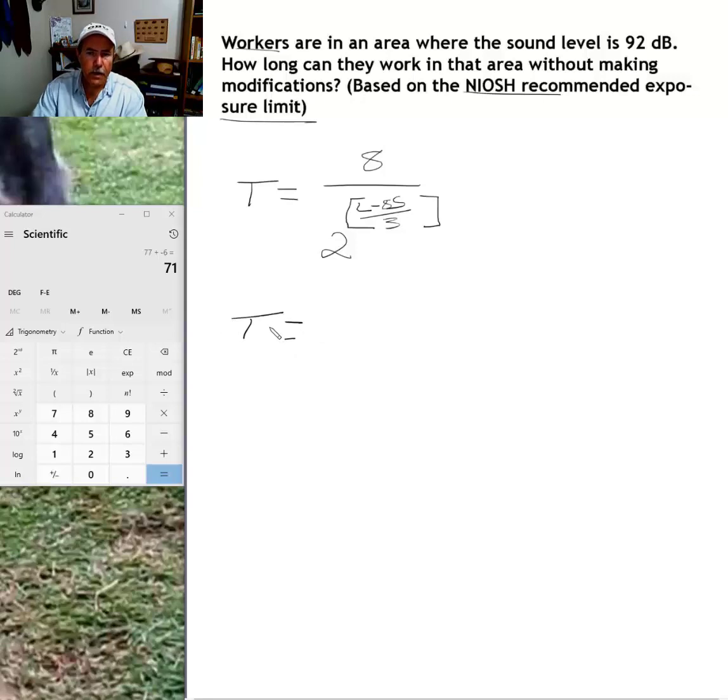Let me explain what all the different variables, symbols, and letters mean. T is the time that we're calculating. Eight is a constant based upon an eight-hour workday. Two is a constant. Three is a constant, and 85 is a constant based upon the NIOSH exposure limits three decibel exchange rate. 85 decibels is the threshold set by NIOSH for hearing exposure.